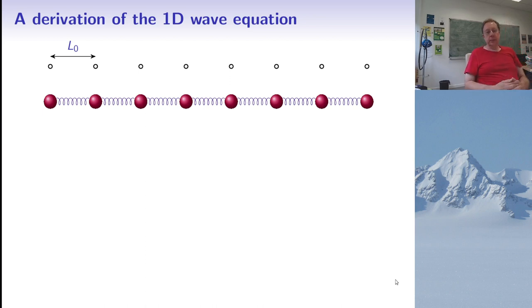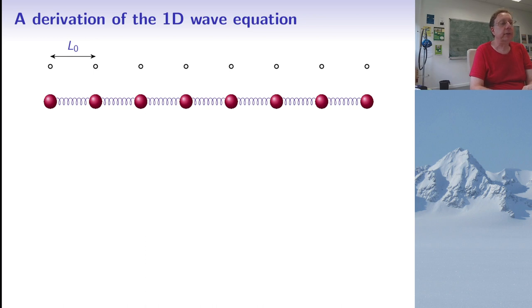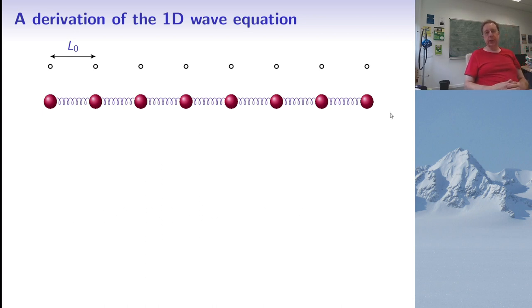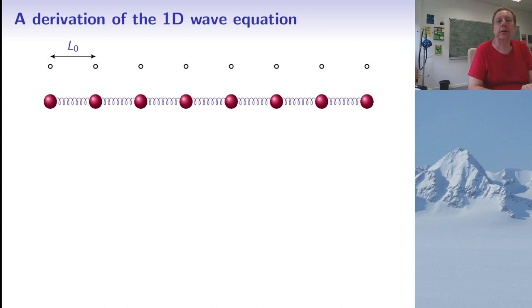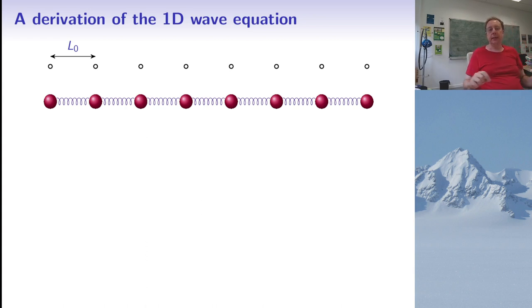Let me now explain how you can derive the wave equation. There are several ways of doing it; this is the one I believe is the simplest. We look at a chain of coupled masses connected by springs. I start with a situation where all springs are at rest, so the length of the springs at rest is called L0. I put all the masses on a line separated by the distance L0, so there is no force acting on any of the masses.